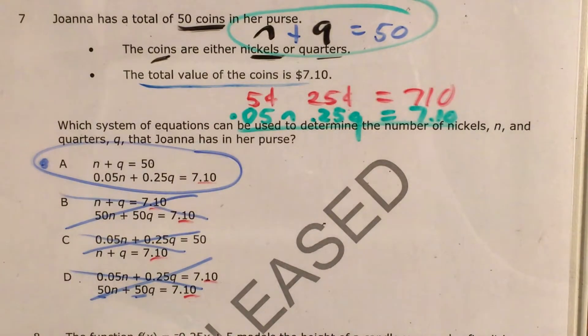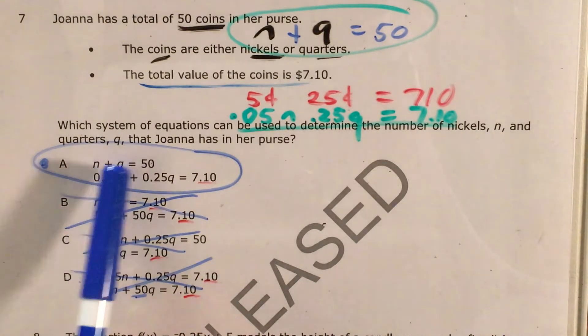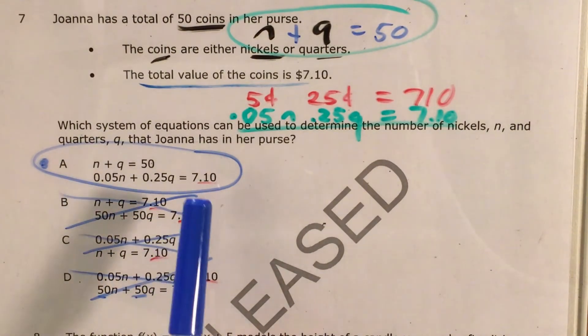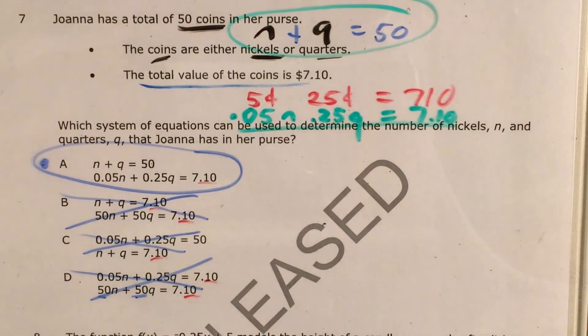The best answer is choice A. We have 50 coins, which are either nickels and quarters. Their value, 5 cents per nickel and 25 cents per quarter, comes together to equal $7.10.